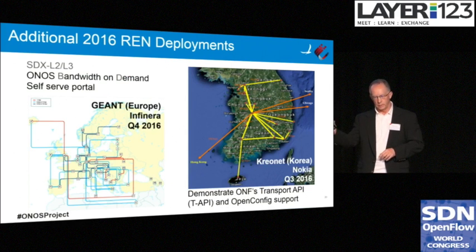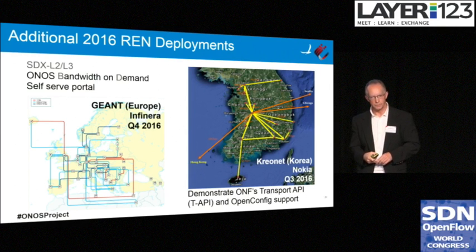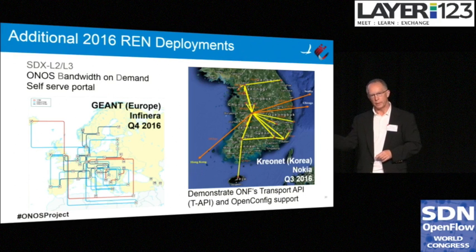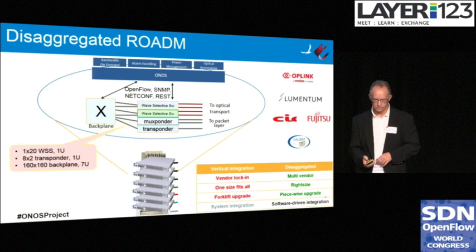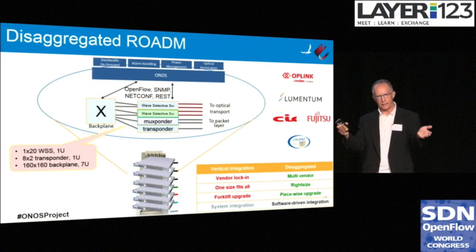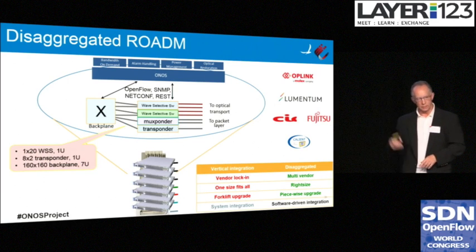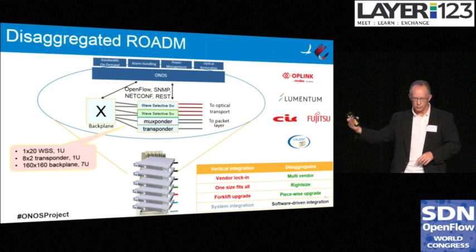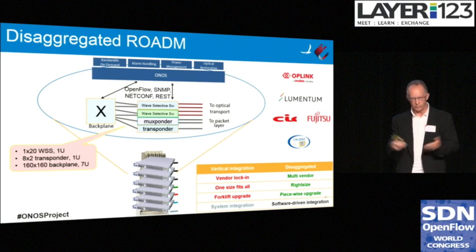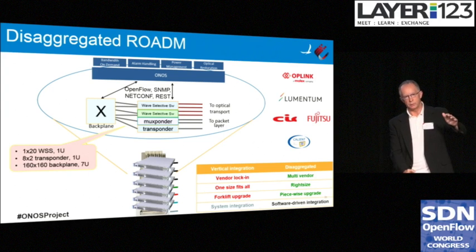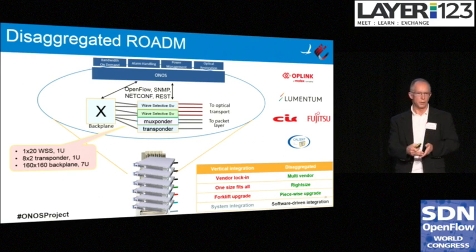Additional deployments in the research and education space: software-defined exchanges for layer two and layer three services, bandwidth-on-demand happening in Europe with GEANT, and in Korea demonstrating ONF's Transport API and OpenConfig support — those are in process happening this year. Along the way, when you're disaggregating the access function, you start asking why not disaggregate the WAN side as well. This started a disaggregated ROADM project. You take the pieces of the ROADM apart — wave-selective switches, muxponders, transponders, and so forth. If you do that, instead of buying a huge chunk of optics which is very expensive, you can right-size it, choose different vendors, do piecewise upgrades, and have software-driven integration. You can see the vendors that have worked together to provide this solution.